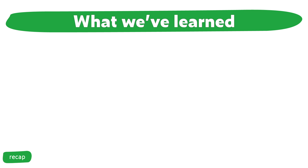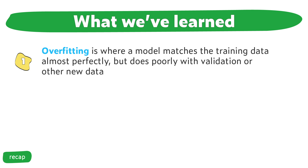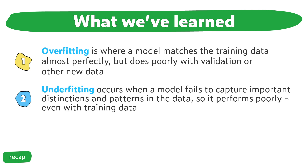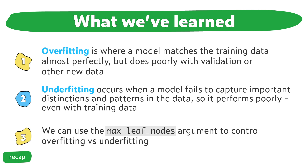Combining what we've covered in this video with the Kaggle Intro to Machine Learning module on underfitting and overfitting, here's a quick recap. One: overfitting is where a model matches the training data almost perfectly but does poorly with validation or other new data. Two: underfitting occurs when a model fails to capture important distinctions and patterns in the data, so it performs poorly even with our training data. And three: we can use the max leaf nodes argument to control overfitting versus underfitting. Learning makes me hungry, so if you need to take a break and eat some pancakes before you work through the coding exercises in the underfitting and overfitting module on Kaggle Learn, I totally understand. When you're ready, join me in the next video, where we're going to go from building models with decision trees to random forests.